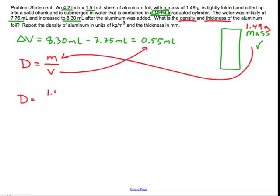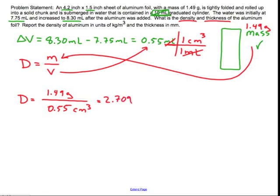It's going to be equal to 1.49 grams, keeping track of my units. There is a relationship that is very straightforward between milliliters and cubic centimeters. That relationship is that 1 milliliter is equal to a cubic centimeter. That's a great one to memorize. So I know that I actually have 0.55 cubic centimeters as well. This is going to equal 2.709 grams per centimeter cubed.